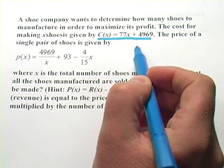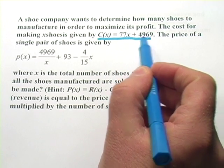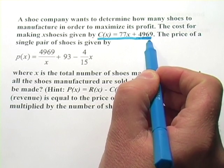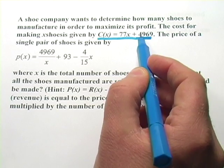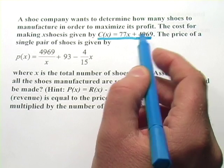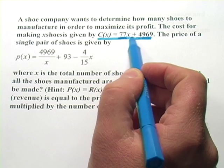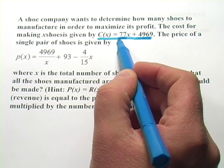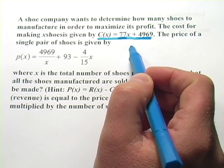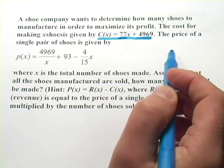C of x equals 77x plus 4969. So what that means is that there's some fixed cost for producing any amount of shoes and if this is dollars it's $4,969. Maybe that's the cost of the shoemaking machine. And then for each shoe there's a cost of 77 dollars I suppose. Maybe that's the materials and the labor involved to make that shoe. That's a pricey shoe. At least the cost to make it is.